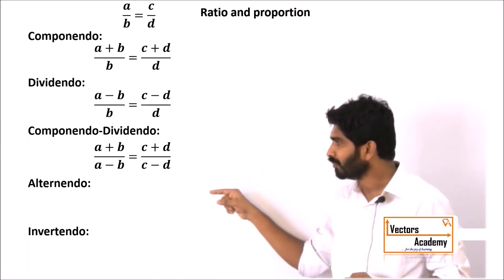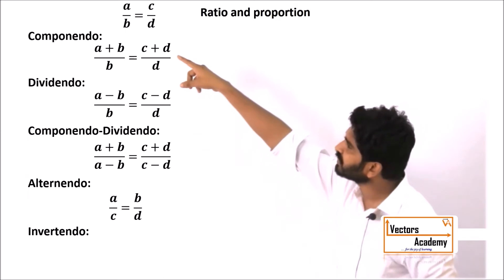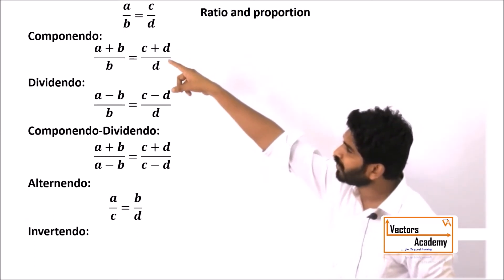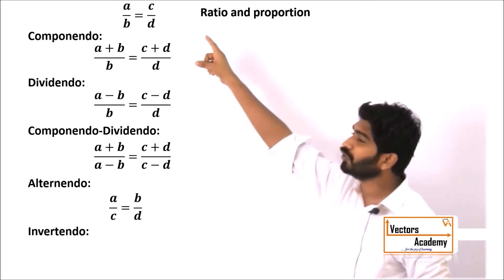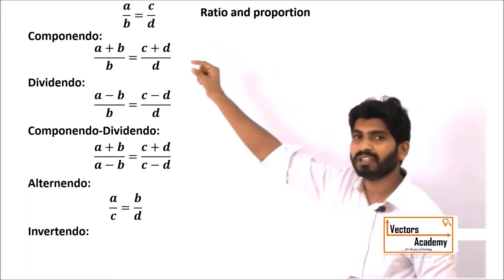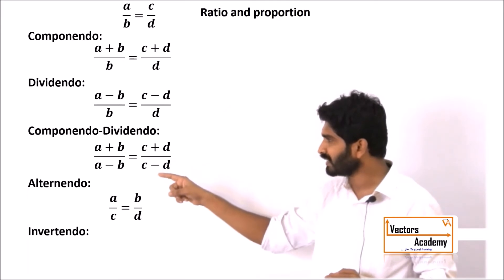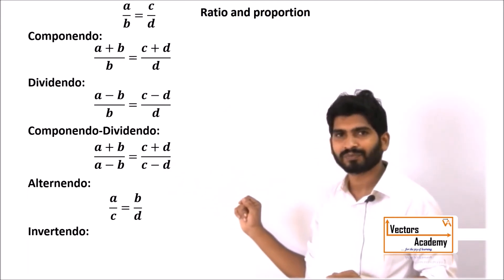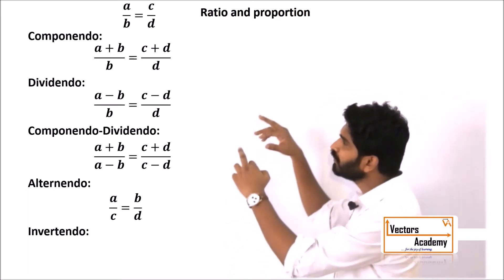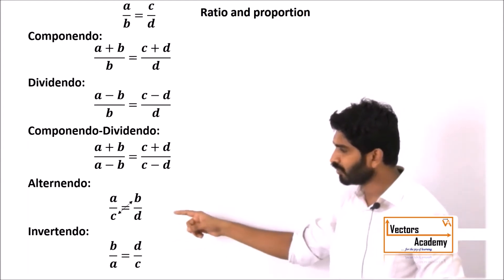The next one is Alternendo. What we do is cross multiply the two terms — the denominator of the first term B moves to become the denominator of the second, giving A/C is equal to B/D. The last one is Invertendo: we simply invert both ratios, so it becomes B/A is equal to D/C.